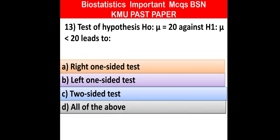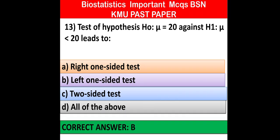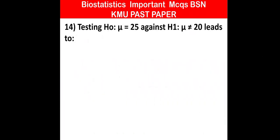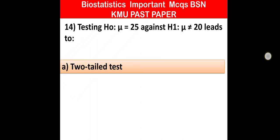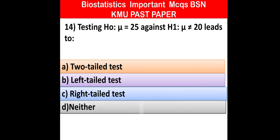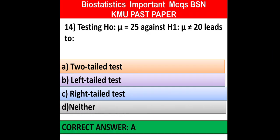MCQ number 14: Testing hypothesis H0 = 25 against H1 not equal to 25 leads to — two-tail test, left-tail test, right-tail test, or neither. Option A is correct: two-tail test.